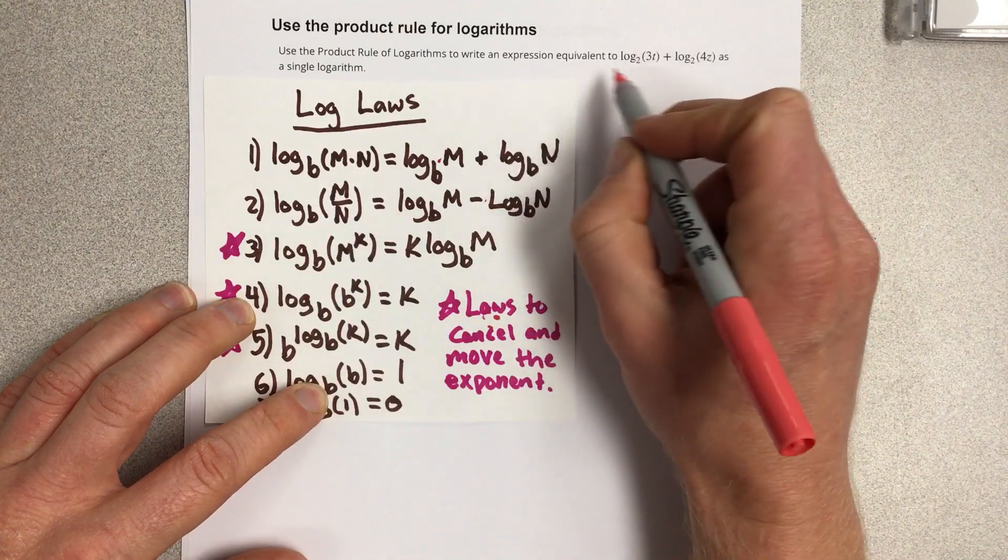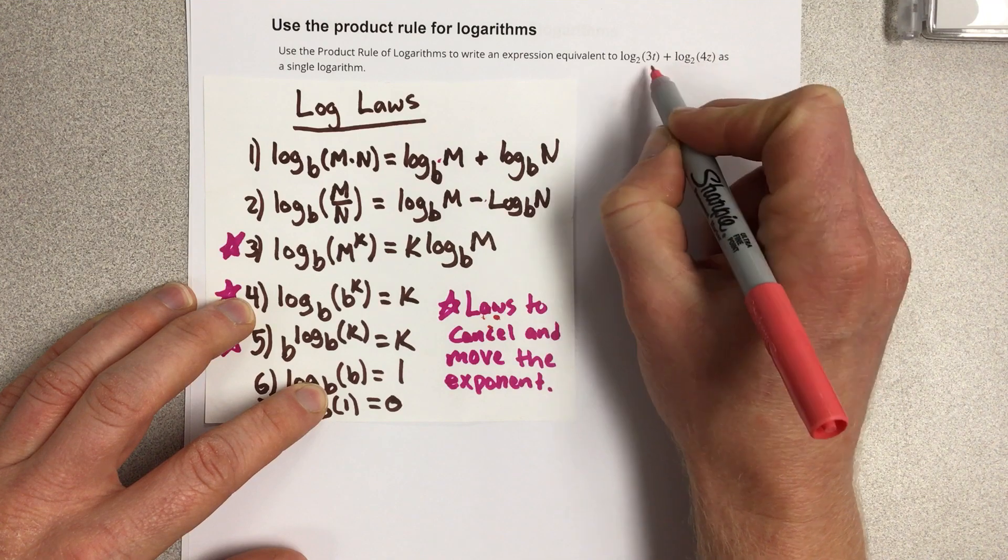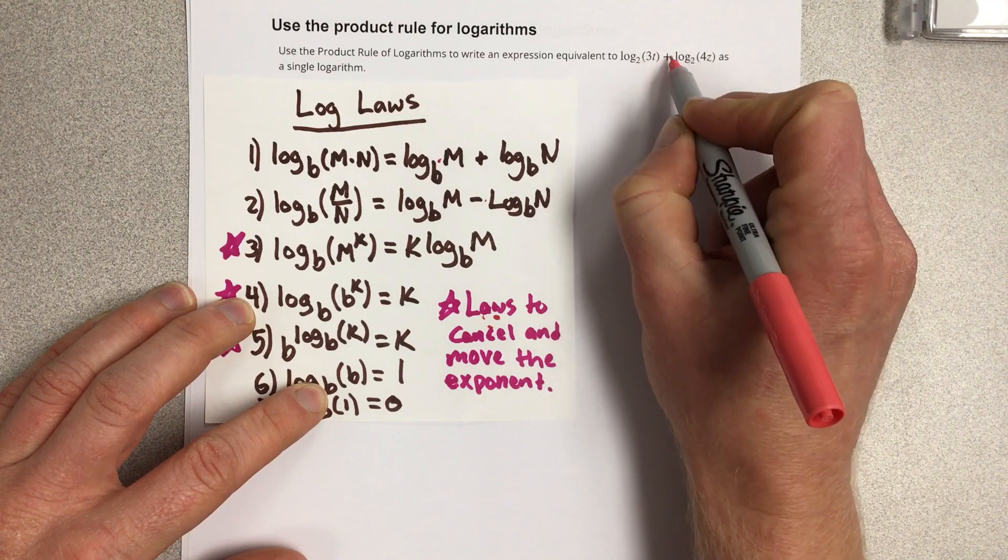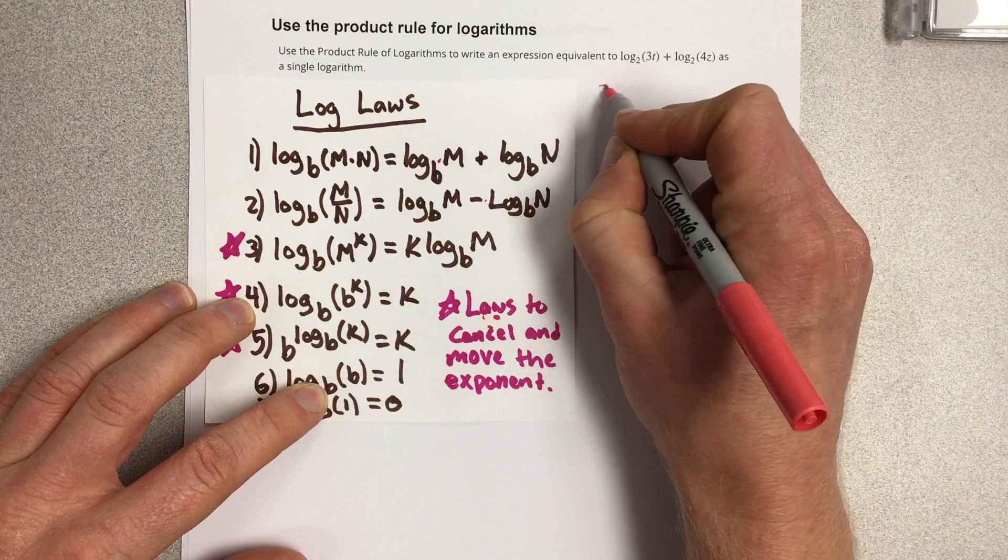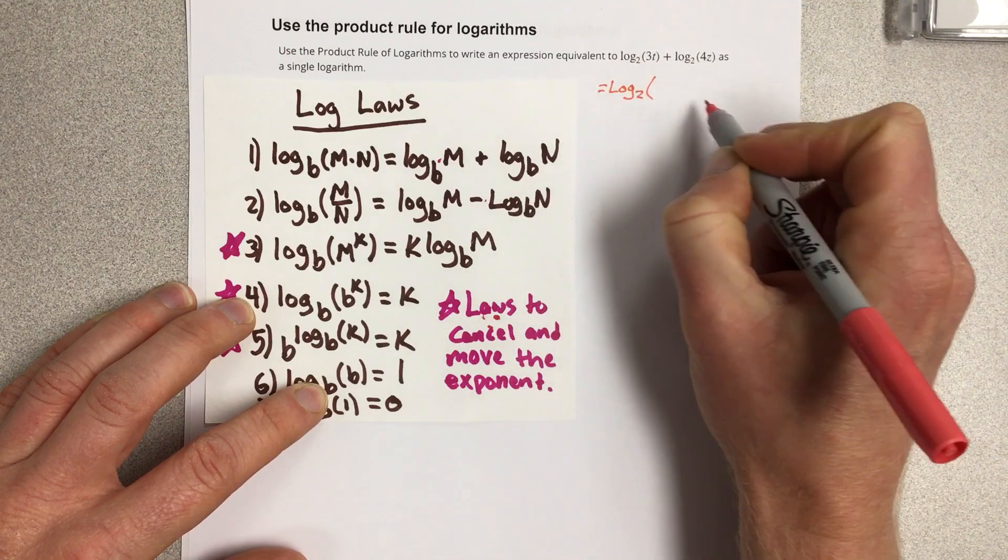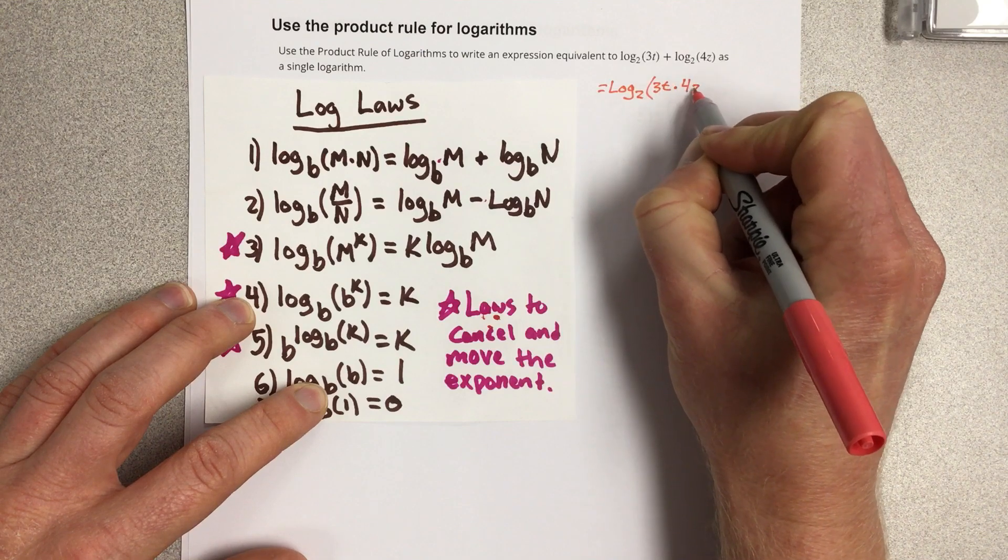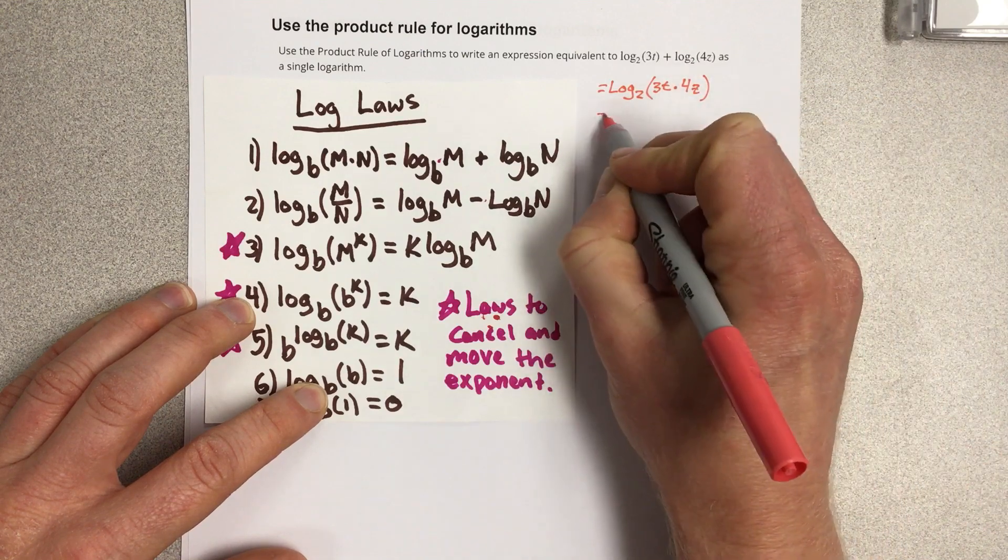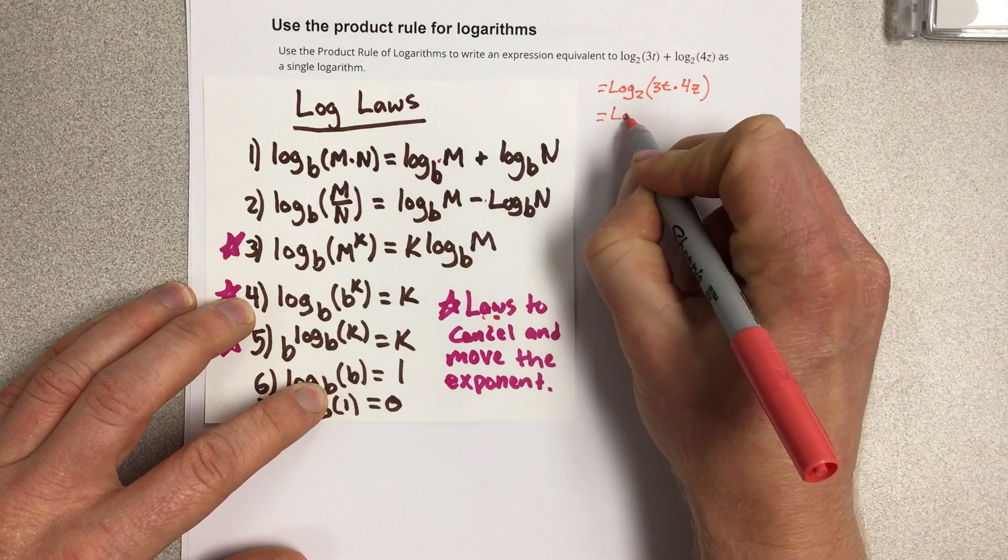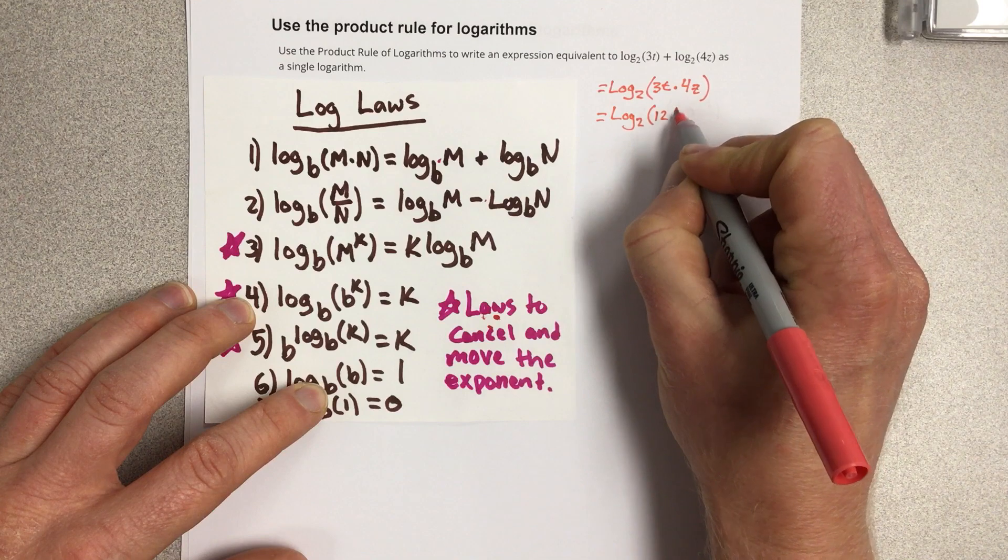So you can see that in our problem we have log base 2 of 3t plus log base 2 of 4z. We have the same base they're being added, so we can write that as log base 2 of 3t times 4z, and then that would equal log base 2 of 12tz.